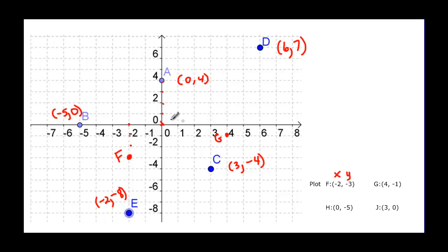Point H is (0, -5). We start at the origin, can't go anywhere left or right because it's zero, then go down five to negative five — that's point H. Finally, point J is (3, 0). We go three in the positive direction, and since y is zero we don't go up or down, landing right there on the x-axis.